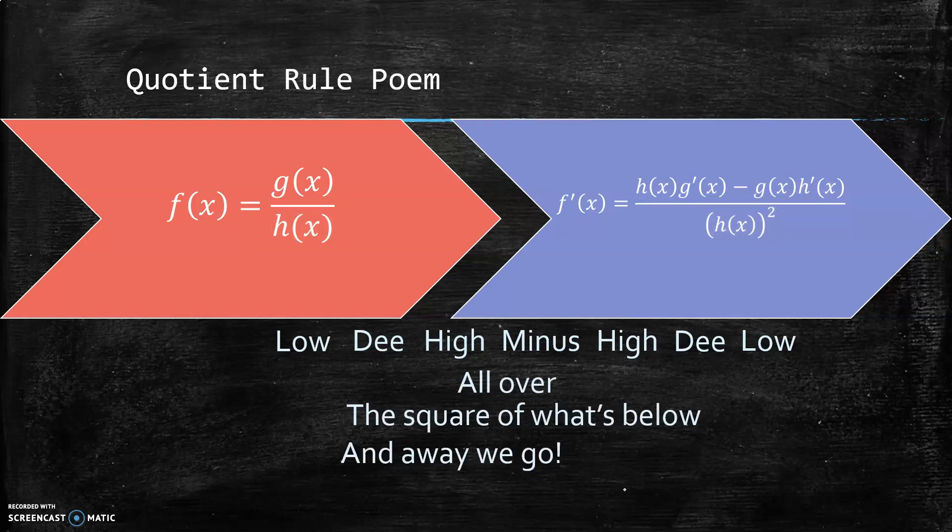The purpose of the poem is that unlike the product rule, it matters what order you take your derivatives in because it's subtraction. If you go in the wrong order you'll have the wrong sign. The poem helps remember the order: low D high minus high D low all over the square of what's below. If you accidentally do high D low minus low D high, your poem doesn't rhyme, so it's wrong.